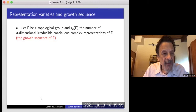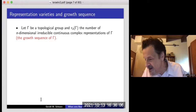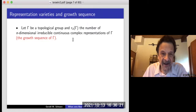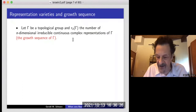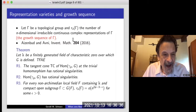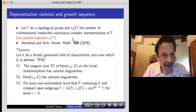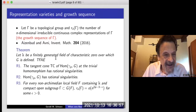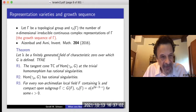There's a connection between growth sequences of topological groups and this representation variety due to the work of Eisenbud and Avni. Let gamma be a topological group and R_n(gamma) the number of n-dimensional irreducible continuous complex representations of gamma, the so-called growth sequence of gamma. Eisenbud and Avni in a paper in Inventiones in 2016 proved many connections between the properties of the representation variety and various properties of groups, including growth sequences. I'm going to state just one of the theorems in their paper.